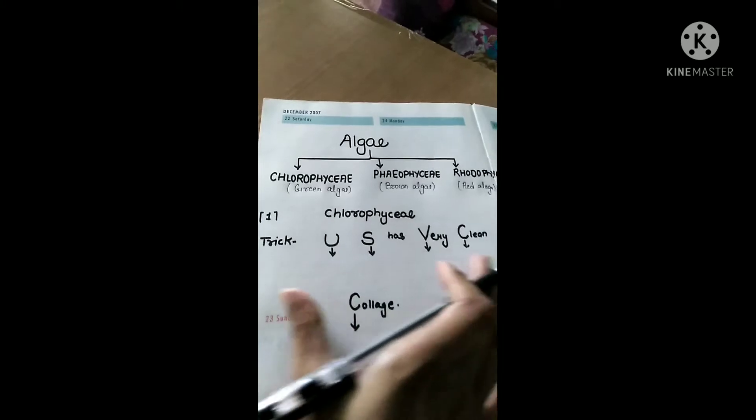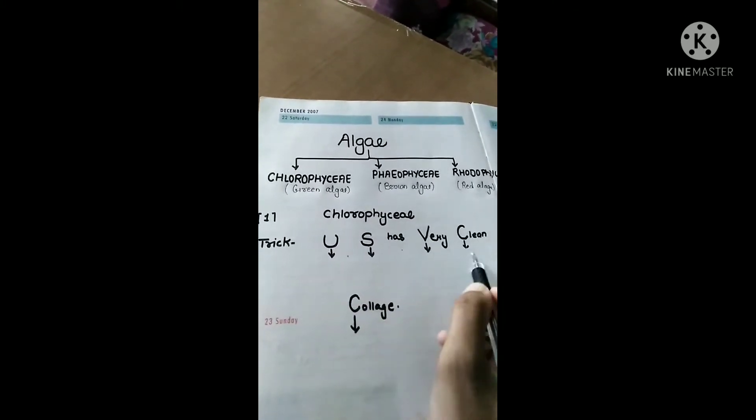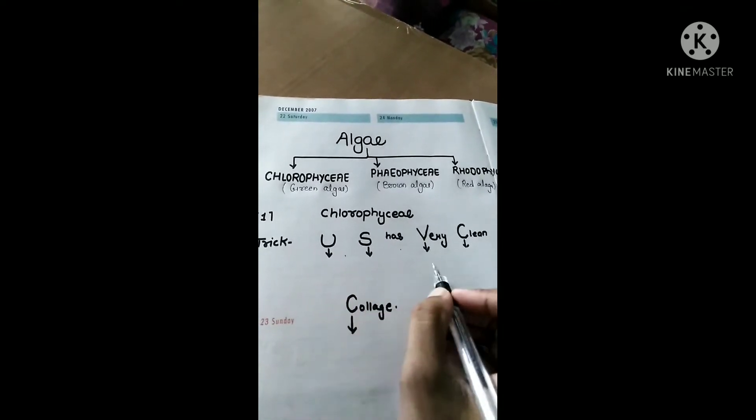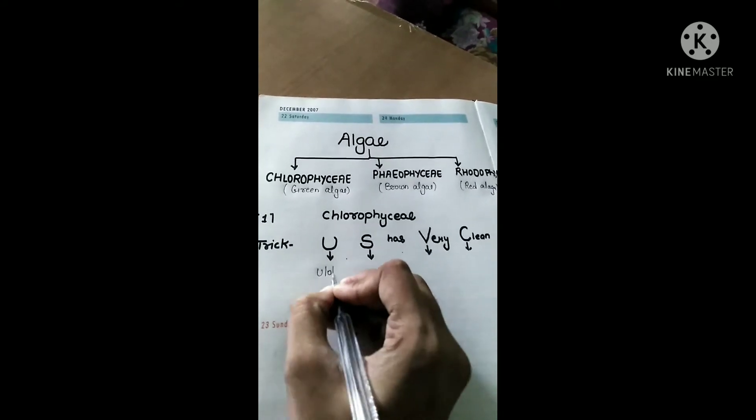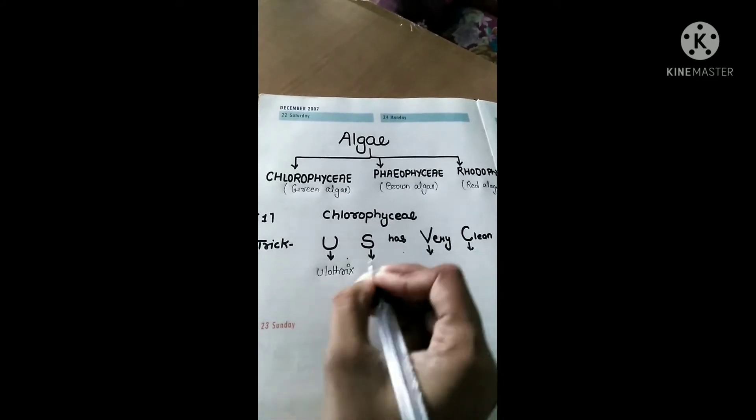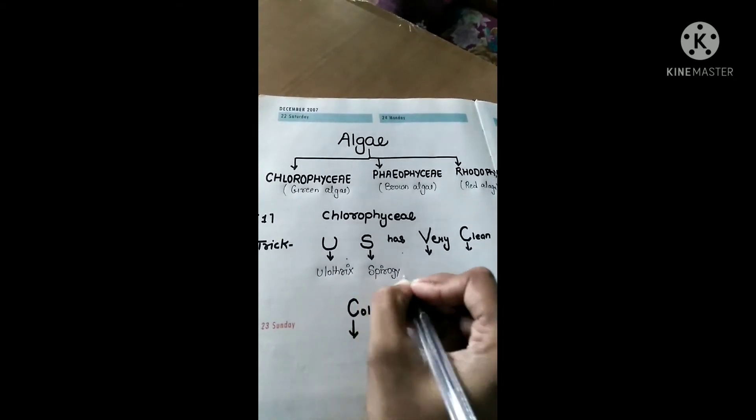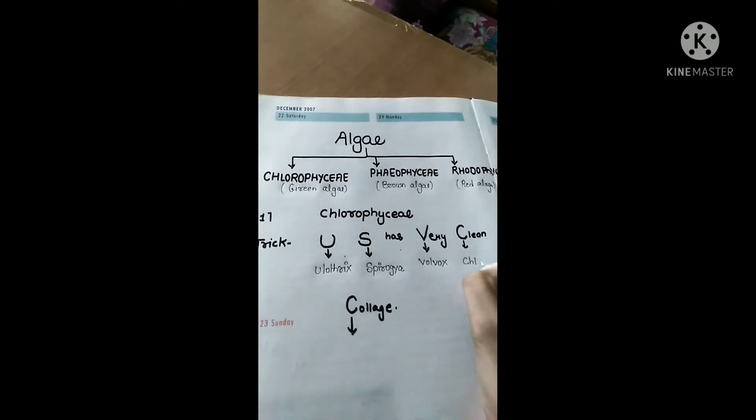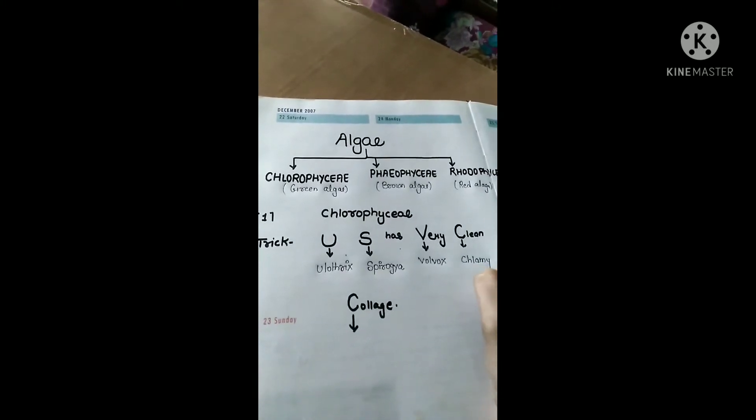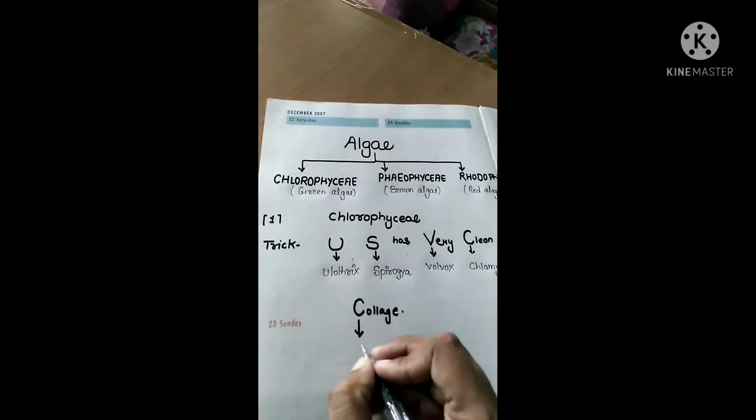Now come to the point. What is the trick of Chlorophyceae? U S has Very Clean College. U for Ulothrix, S for Spirogyra, V for Volvox, C for Chlamydomonas, and C for Chara. So basically these five are the examples of Chlorophyceae, that is the green algae.